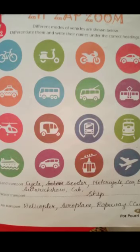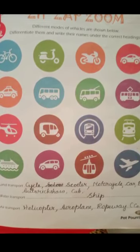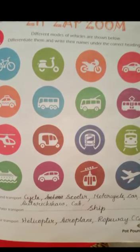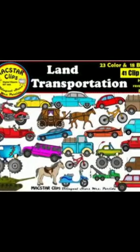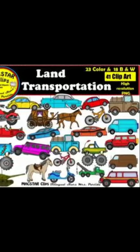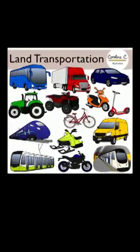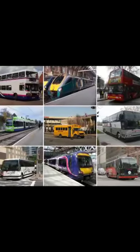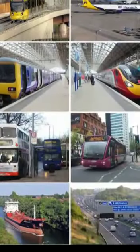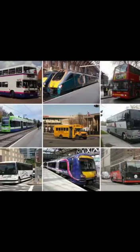In this chapter, different modes of vehicles are shown. Differentiate them and write their names under the correct headings. Land transport is the transport or movement of people, animals, or goods from one location into another location on land.